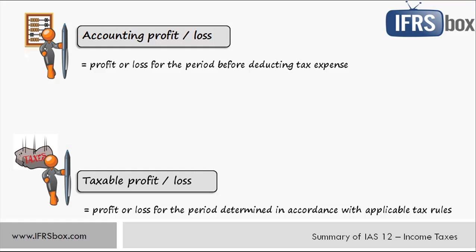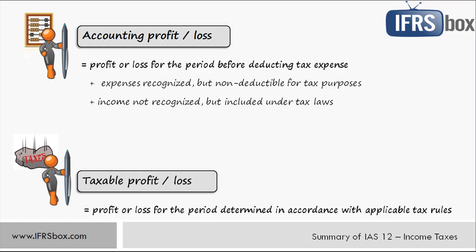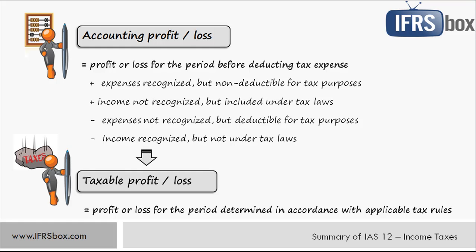As tax rules in your country might vary from accounting rules applied in your company, there will be some differences between these two. Namely, those are expenses recognized but not deductible for tax purposes — for example, non-deductible expenses for entertaining customers are not allowable for tax purposes in some countries. Then there could be some income not recognized in the financial statements but included in the tax return, for example some items taxed on a cash basis. Another type of difference might be items not recognized in the financial statements but excluded under tax rules — for example, some government grants received might not be taxable at all.